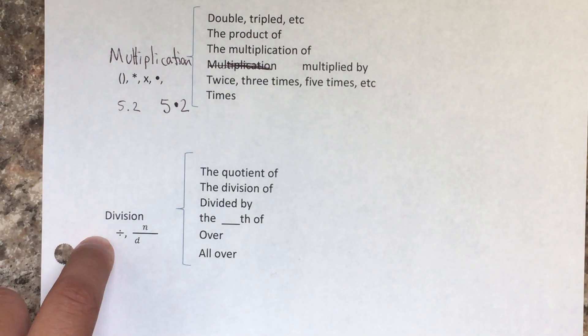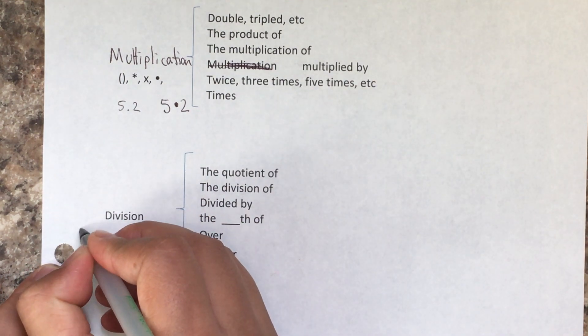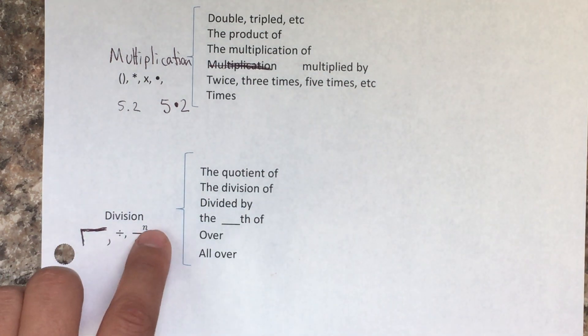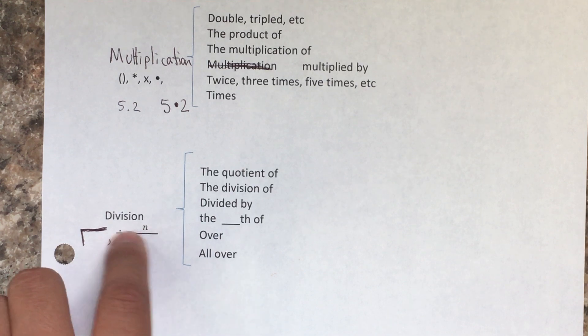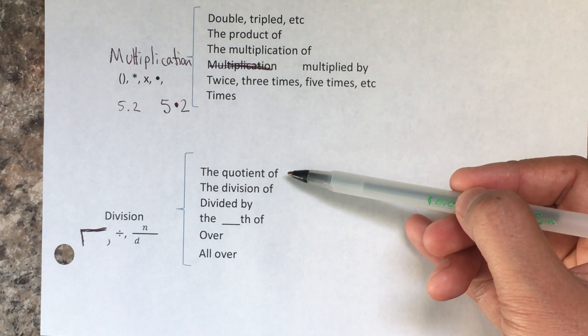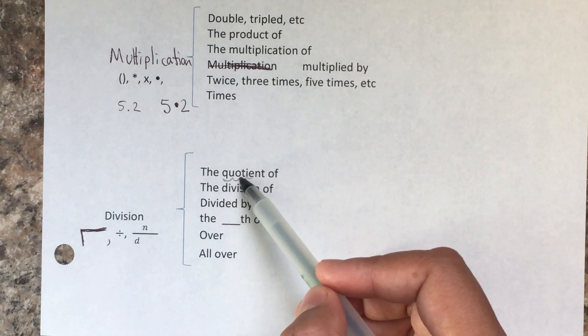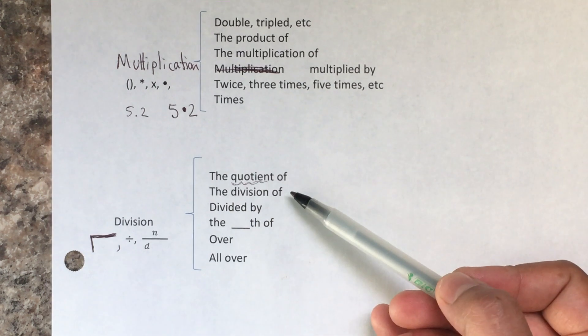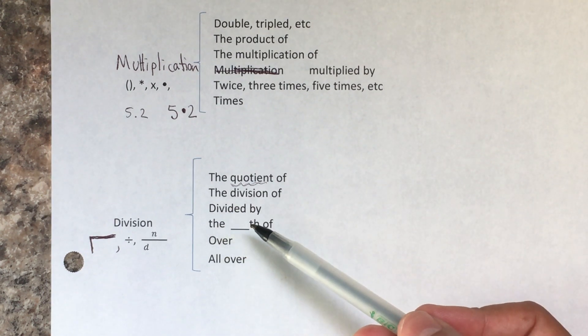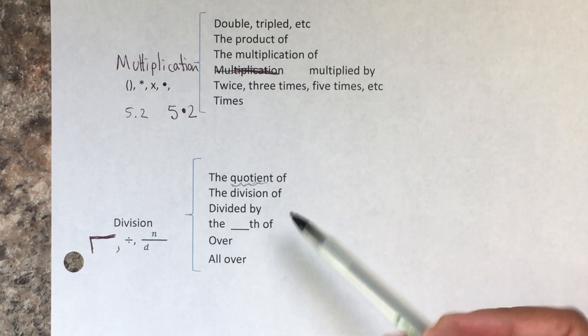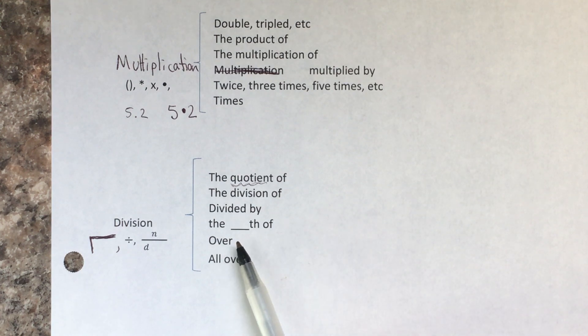The next one—some of the symbols are this right here, and in some countries it's backwards. That's also division. When you have a fraction, n divided by d, anytime you see a fraction that's division. The vocabulary words will be: the quotient of (el cociente de)—that's division. The division of, divided, divided by, the fourth of, the sixth of, the ninth of—that means you're dividing. Over, all over—also division, but everything is being divided by whatever goes in here.